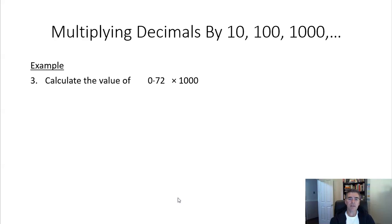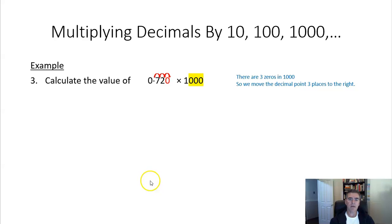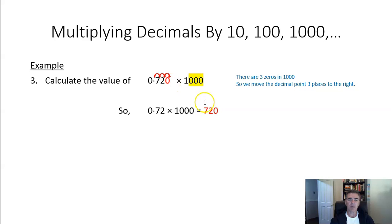Let's have a look at a third example: 0.72 times 1000. There are three zeros in 1000, so we're going to move the decimal point three places to the right — one, two, three. But you'll notice there's nothing there, so we put a zero on the end. Now our decimal point is after that zero. So 0.72 times 1000 is 720. The decimal point is now at the end, and we don't write that.